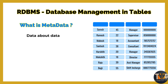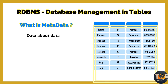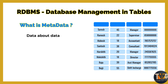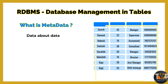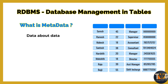We need to represent this data. This data is related to background information. This is the actual data: Suresh 45 manager, Ramesh 22 supervisor, contact number. This is the actual data, but we need to store this data directly.